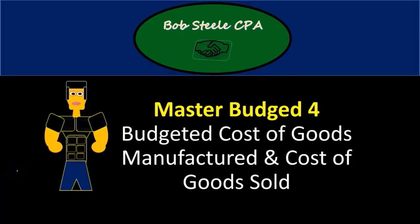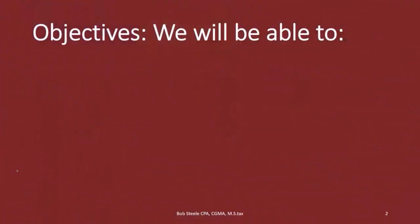Hello, in this lecture we're going to continue with the Master Budget Part 4. If you haven't looked at the previous three parts, take a look at those. We'll be continuing in Part 4 with the Budgeted Cost of Goods Manufactured and Cost of Goods Sold.